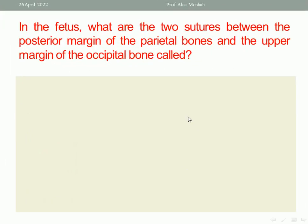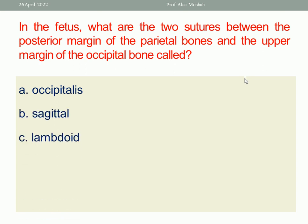Next question: In the fetus, what are the two sutures between the posterior margin of the parietal bones and the upper margin of the occipital bone called? Options: occipital, sagittal, lambdoid, coronal, or frontal. Between the parietal bone and the occipital bone, it is called the lambdoid suture. Lambdoid suture is the best one response, as you see here in this slide.